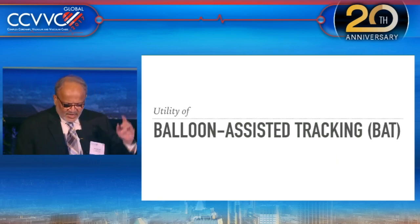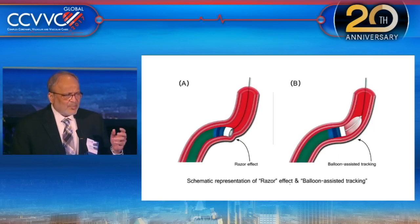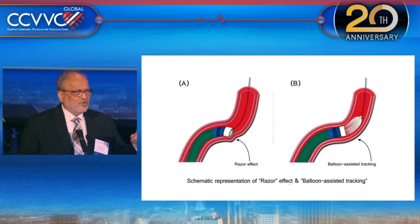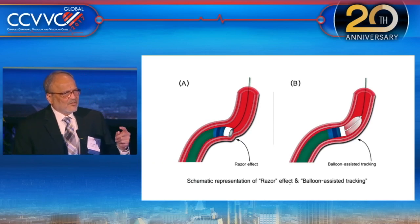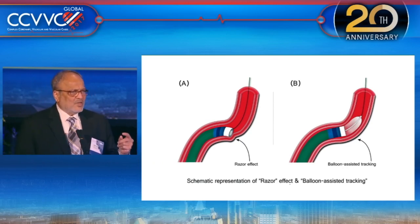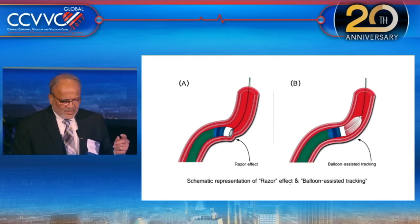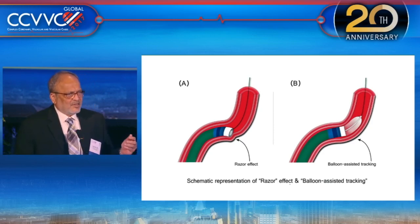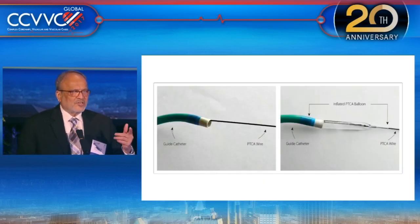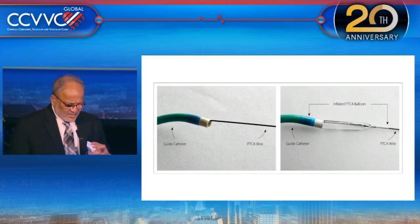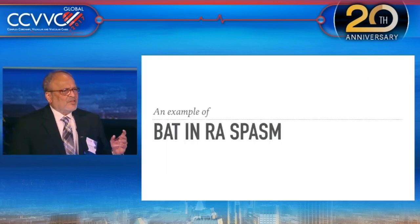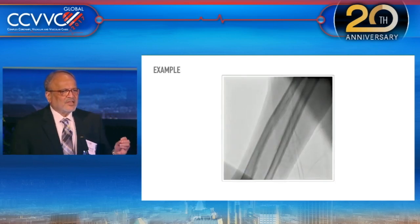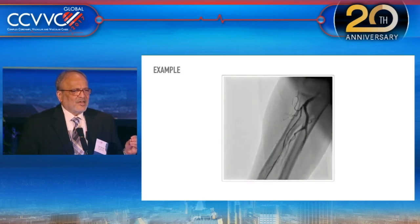Balloon-assisted tracking — we have already published a couple of papers on this technique. It is used to avoid the razor effect to a tortuous radial artery or a very small radial artery. We use a balloon protruded half outside the catheter — diagnostic or guide catheter — at a modest atmospheric pressure of 4 to 6, which helps track the catheter in very difficult situations. This is the in vitro demonstration, and it can be utilized in difficult situations such as a very small radial artery with spasm.